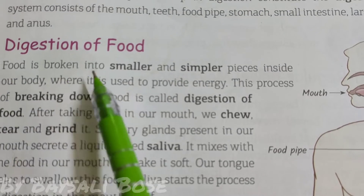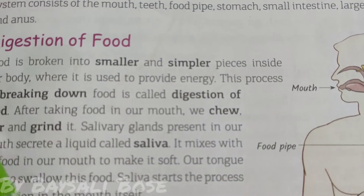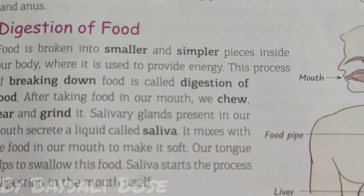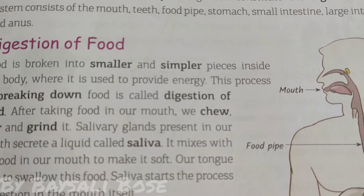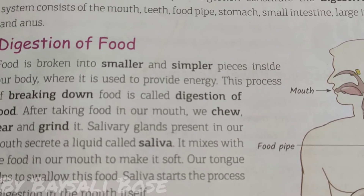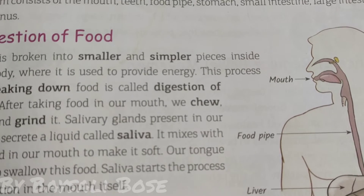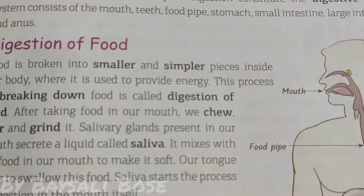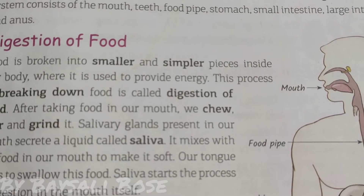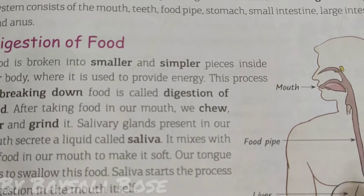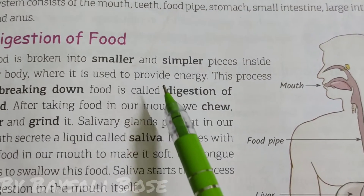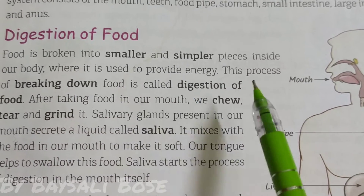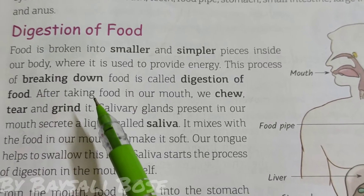Food is broken into smaller and simpler pieces inside our body, where it is used to provide energy. The food we eat cannot be directly absorbed or used by our body for making energy. The food is broken down into smaller and simpler pieces which are then absorbed and give us energy. This process of breaking down food is called digestion.